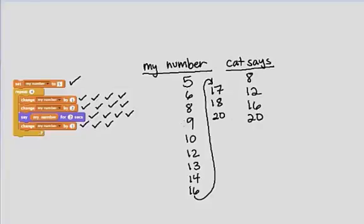And then I change it by 1 making it 21 in the end. And remember here I was repeating 4 times and I found that the cat said 4 numbers.